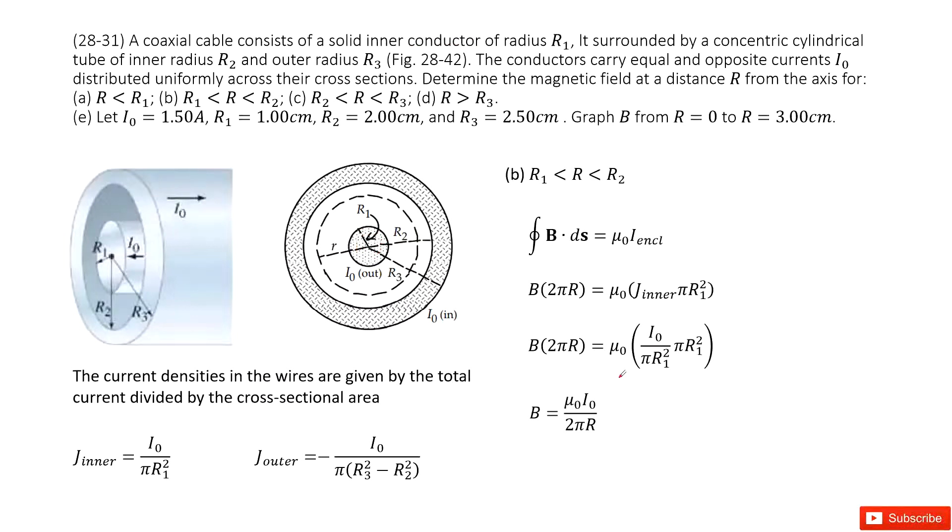The second part considers r is larger than r1 and smaller than r2. Similarly, we can draw an enclosed path like this one. B times the path 2πr equals μ0 times the enclosed current, and the enclosed current is just I0. You reorganize it and get the answer.